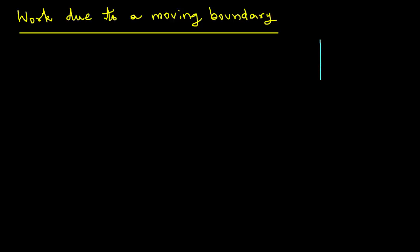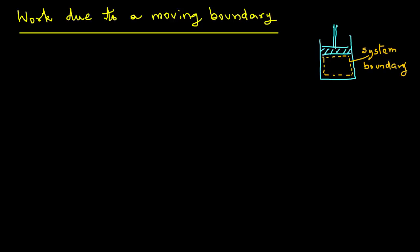Let's consider work due to a moving boundary. In this case, we will look at a certain gas in a cylinder with a piston, where the system boundary encloses only the gas. The cylinder and the piston are outside the system boundary, so they are not part of the system.